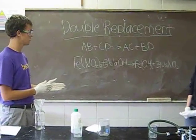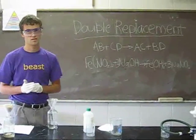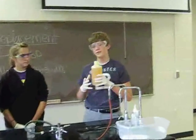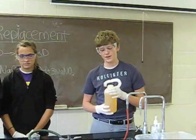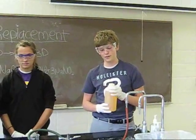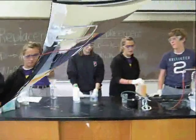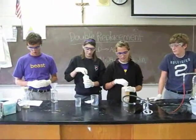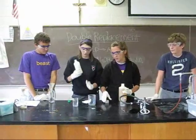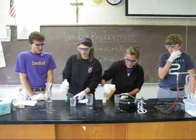The reaction yields iron 3 hydroxide as the product. We make this by mixing a liter of water with a mole of iron 3 nitrate. Then we take 25 milliliters of iron 3 nitrate and 25 milliliters of sodium hydroxide.